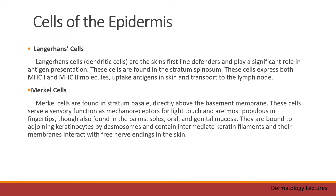Merkel cells are found in the stratum basale, directly above the basement membrane. These cells serve a sensory function as mechanoreceptors for light touch and are most populous in fingertips, though also found in the palms, soles, and oral and genital mucosa. They are bound to adjoining keratinocytes by desmosomes, contain intermediate keratin filaments, and their membranes interact with free nerve endings in the skin.